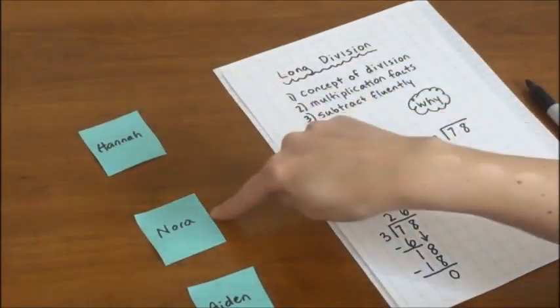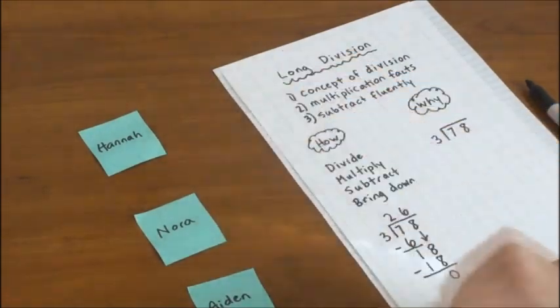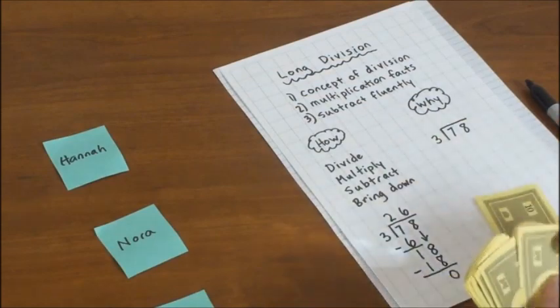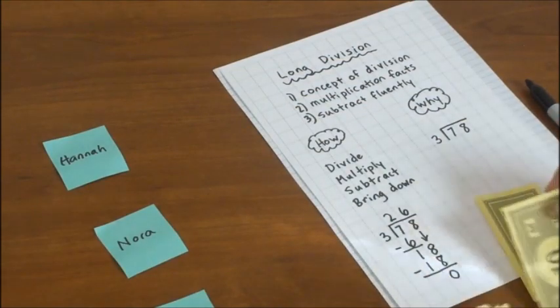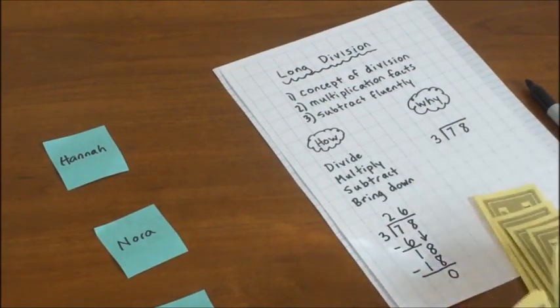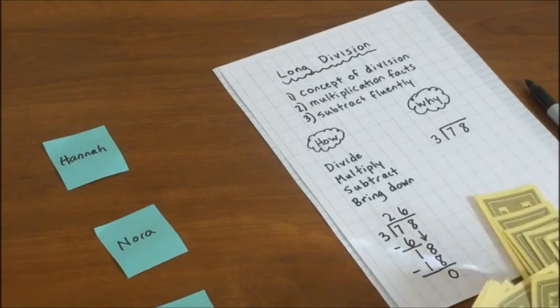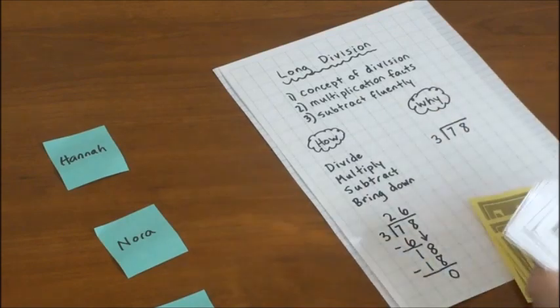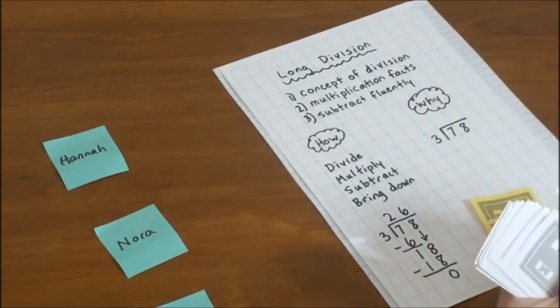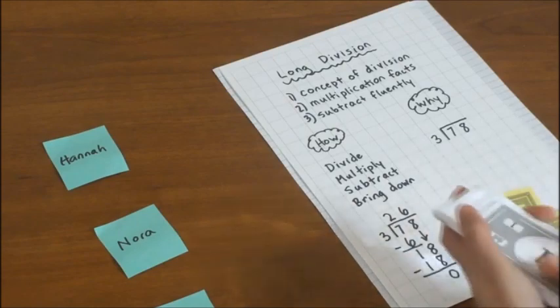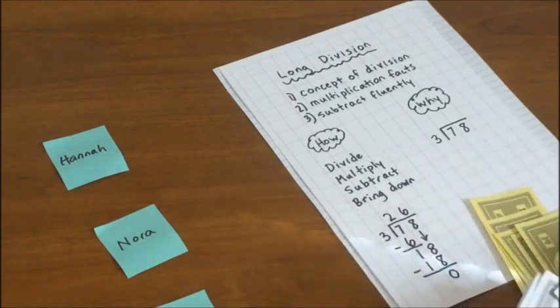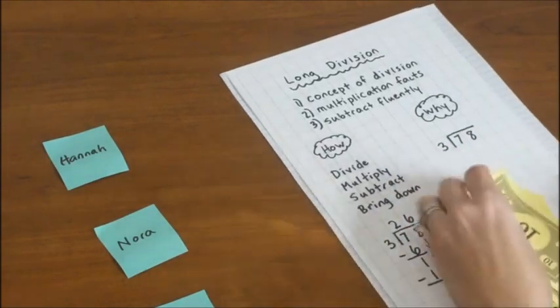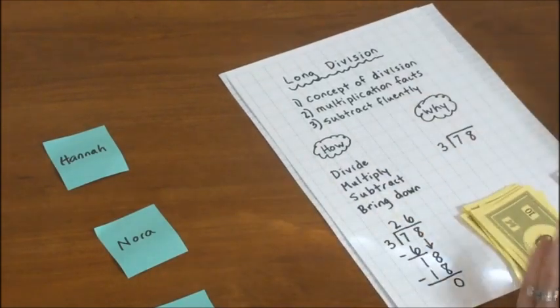And it helps even to have real names for the kids when you're doing this with kids. So we're going to have Hannah, Nora, and Aiden. And these are their 3 spots for their money. So let's count out $78. And the great thing about using monopoly money like this is that it mirrors the place value in our number system. So I have 7 tens. And I'm going to get 8 ones here. 6, 7, 8. And so my stack of 7 tens and 8 ones mirrors the 7 tens and the 8 ones in 78.